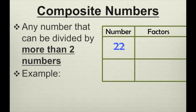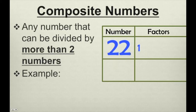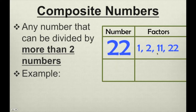How about 22? What are the factors of 22? Well, 1, 2, 11, and 22 are all factors of 22. Since it has more than 2 factors, it's a composite number.